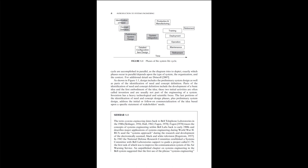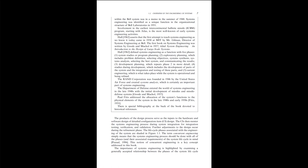An unpublished chapter on systems engineering in the Bell system suggested that the first use of the phrase 'systems engineering' within the Bell system was in a memo in the summer of 1948. Systems engineering was identified as a unique function in the organizational structure of Bell Laboratories in 1951. Involvement in the earliest intercontinental ballistic missile program, starting with Atlas, is the most well-known of early systems engineering activities. Hall, 1962, asserts that the first attempt to teach systems engineering as we know it today came in 1950 at MIT by Mr. Gilman, director of systems engineering at Bell.